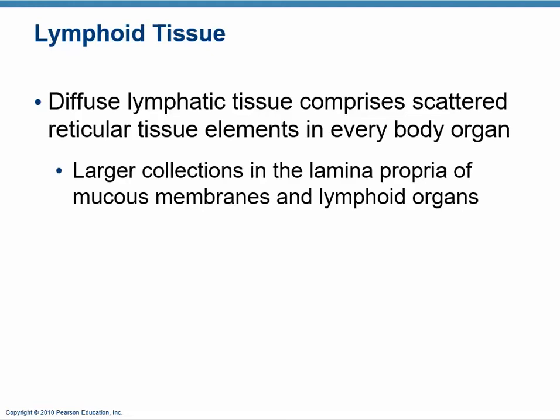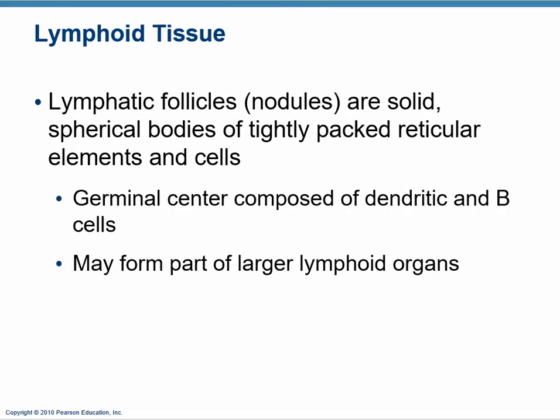Diffuse lymphoid tissue is found just about everywhere — we have more of it at borders where things can get in, so along the mucous membranes, and we have it in the lymphoid organs. Those organs are made up primarily of this lymphoid tissue. These follicles are spherical bodies of reticular tissue. They're not considered organs because they don't have more than one tissue type — there's only reticular tissue — but you can see them, especially under the microscope.